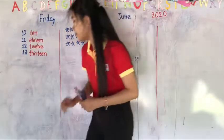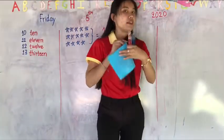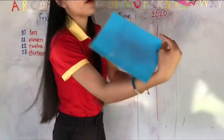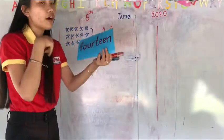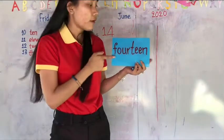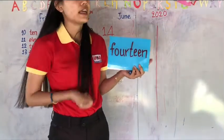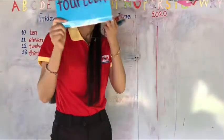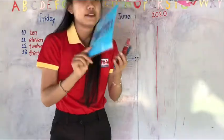Now count with me. One, two, three, four. Four, four-teen, teen. Four-teen, all together. Fourteen, fourteen, fourteen. Again, fourteen, fourteen. Good job.